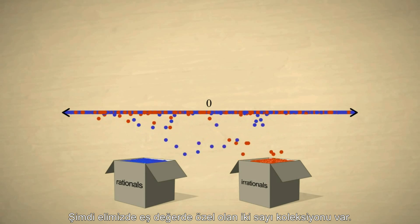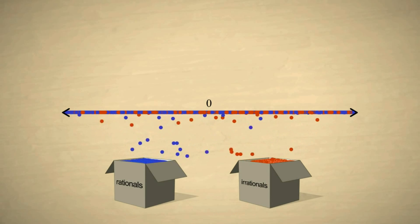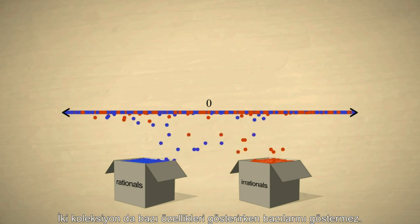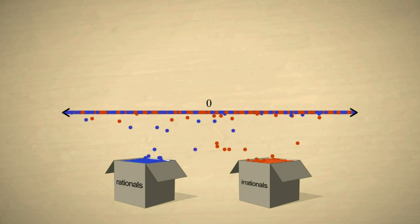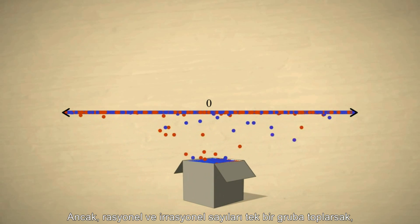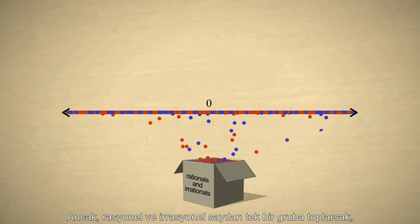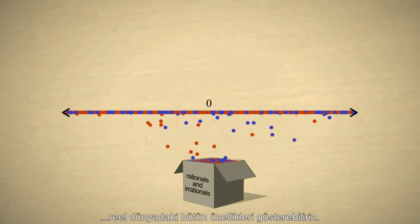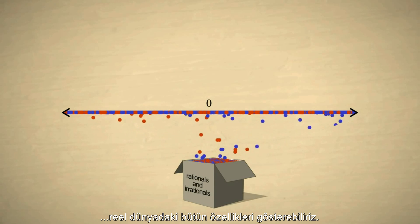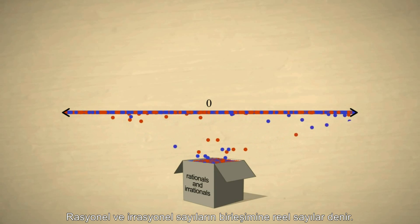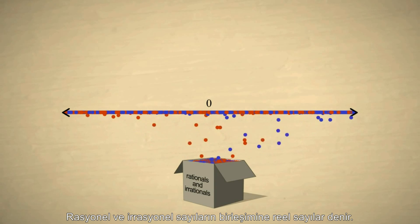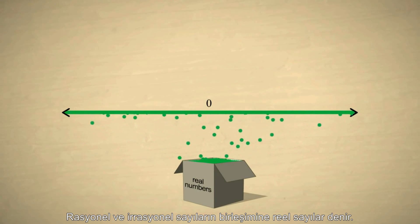We now have two mutually exclusive collections of numbers. Each collection can represent some quantities, but not others. However, if we combine the rational and irrational numbers into a single group, then we can represent any type of quantity in the real world. This collection, composed of rational and irrational numbers, is called the real numbers.